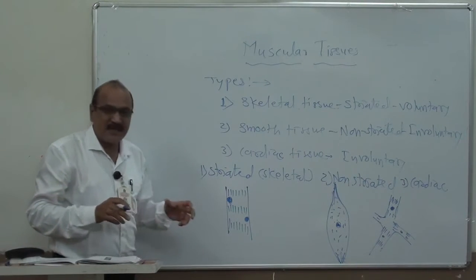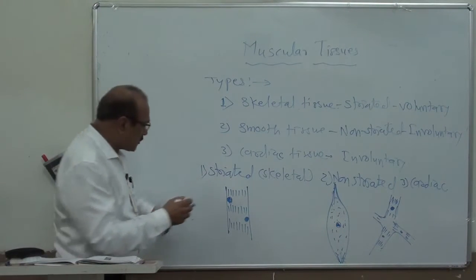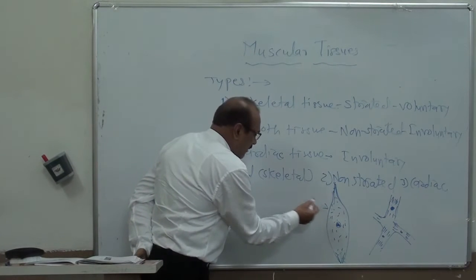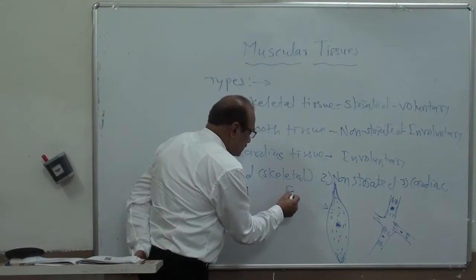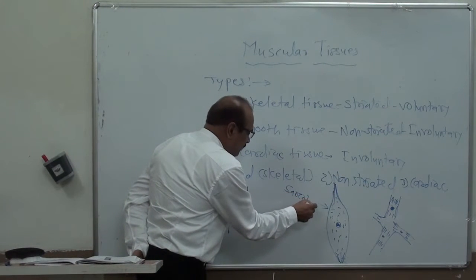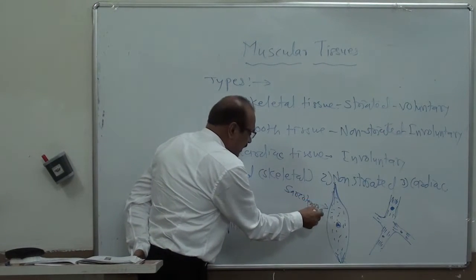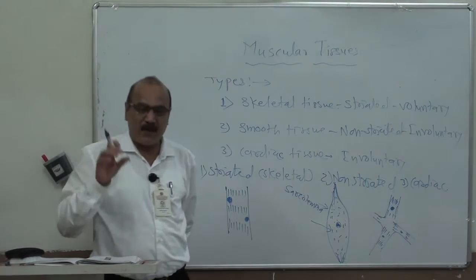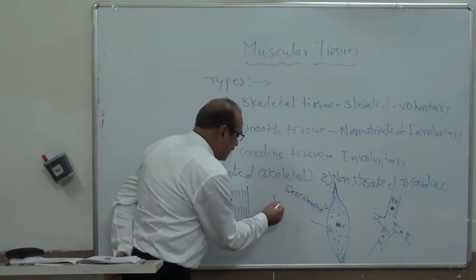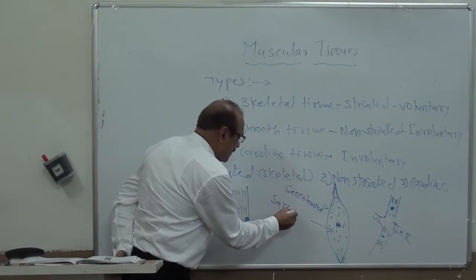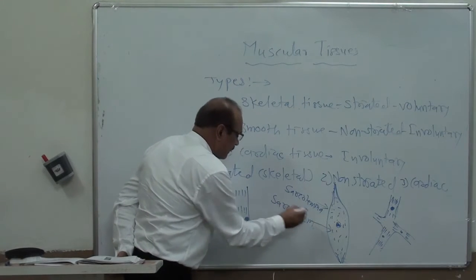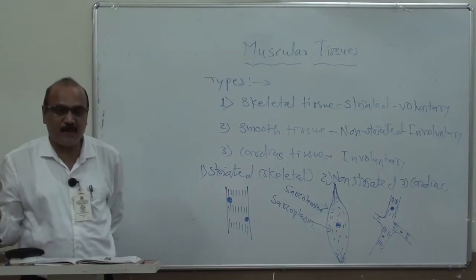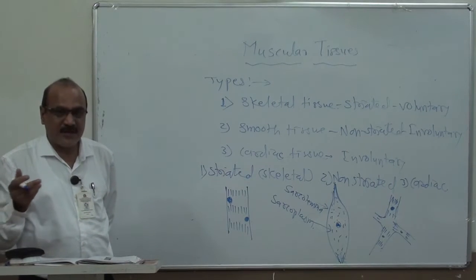Regarding the structure of muscle: the outer part is called the sarcolemma, and the inner cytoplasm found in the inner region is called the sarcoplasm. These muscles are responsible for contraction and relaxation.